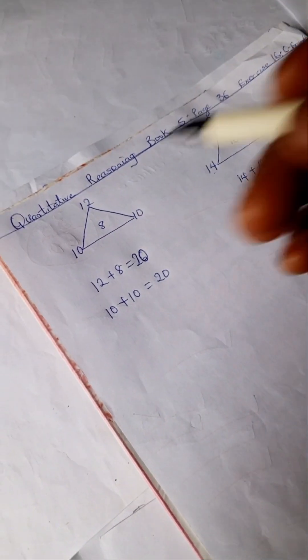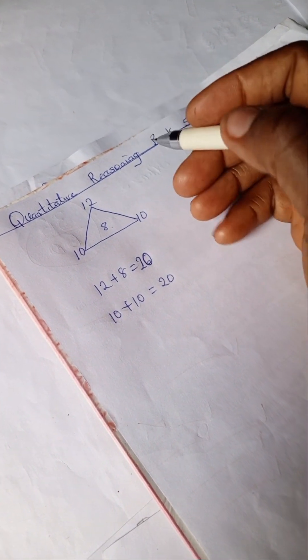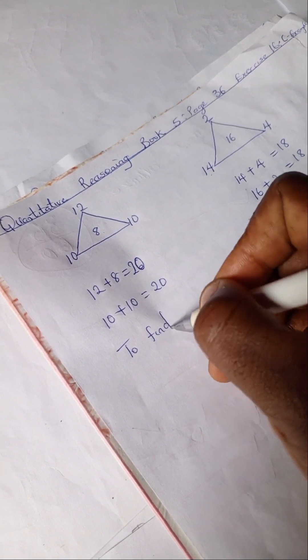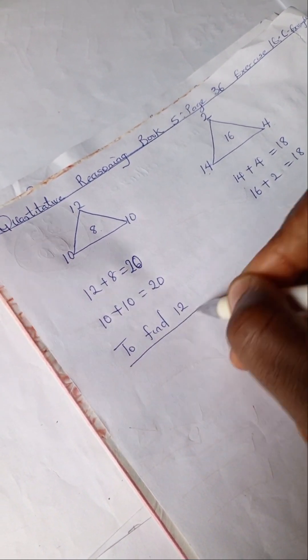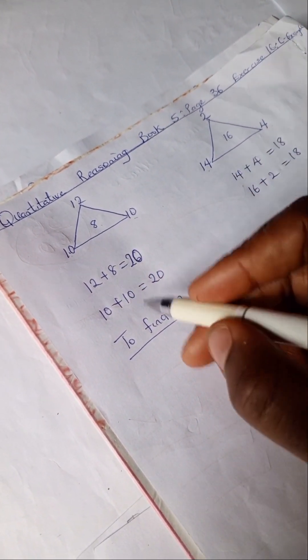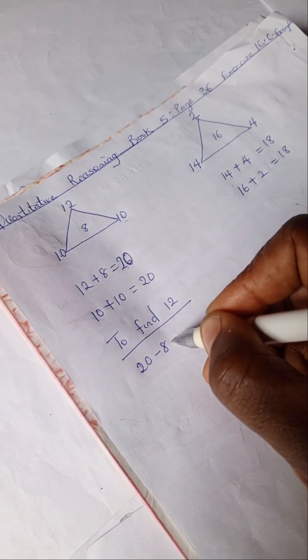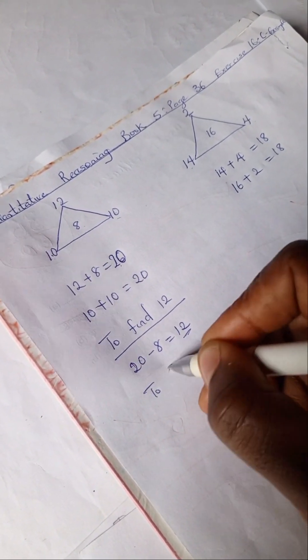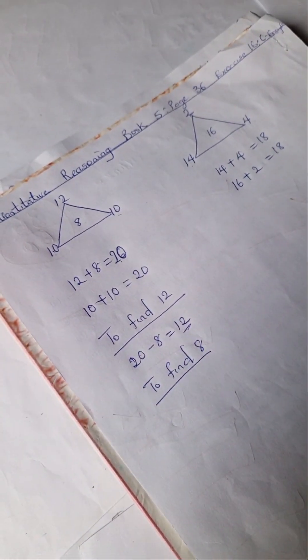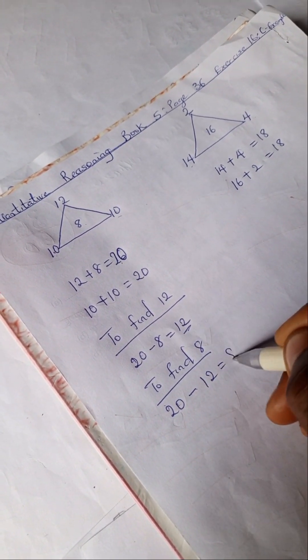So whichever part you are finding, you would make use of this number. So let's find 12. Since this part is complete, we can just say 20 minus 8 which is 12 and to find 8, we can do the same thing. So let's find 20 minus 12 and 20 minus 12 is 8.